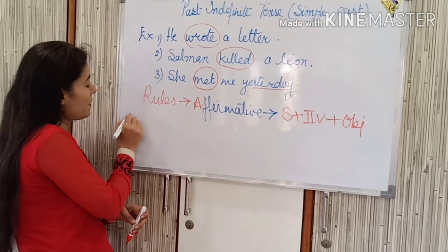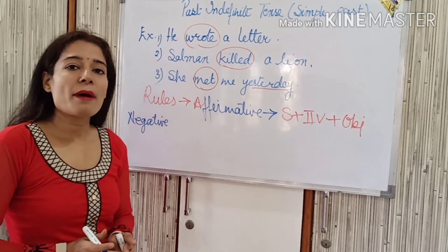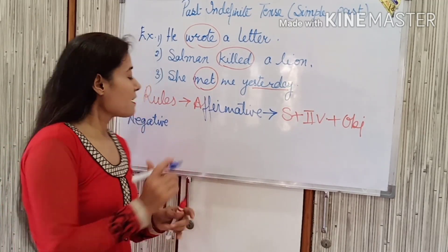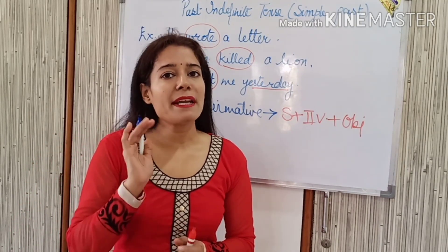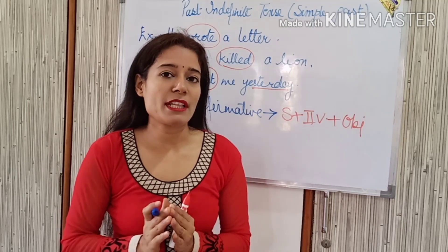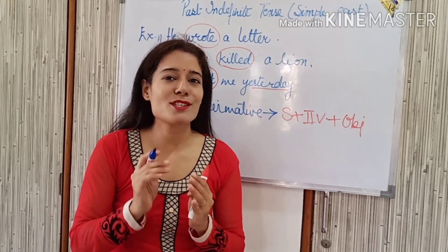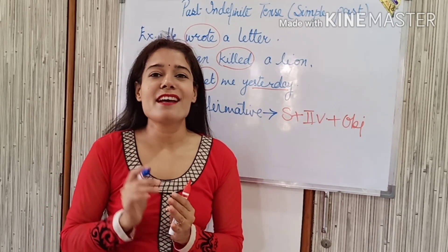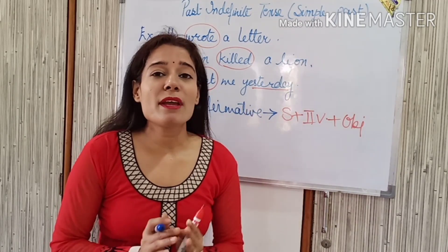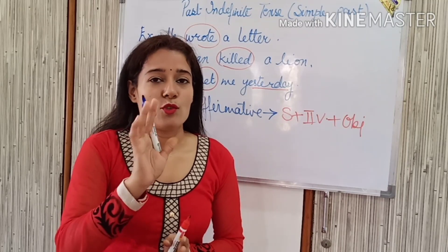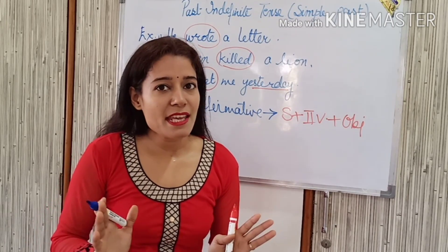Now for negative sentences in simple past or past indefinite tense: until now we have seen that in affirmative sentences the verb form changes, but as soon as negative and interrogative sentences come, some keywords are added — either with 'not' or to show a question. The keyword that represents simple past or past indefinite tense is 'did'.